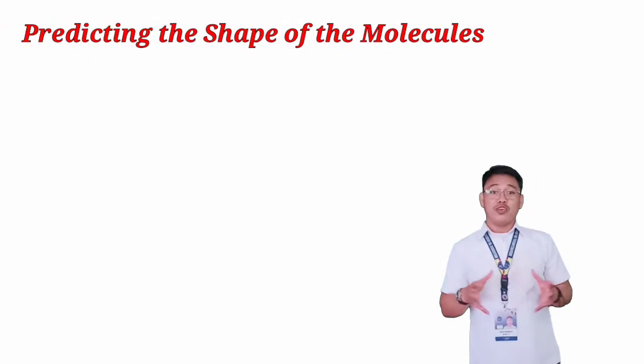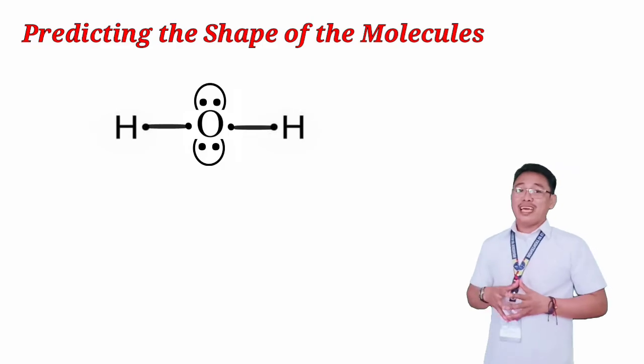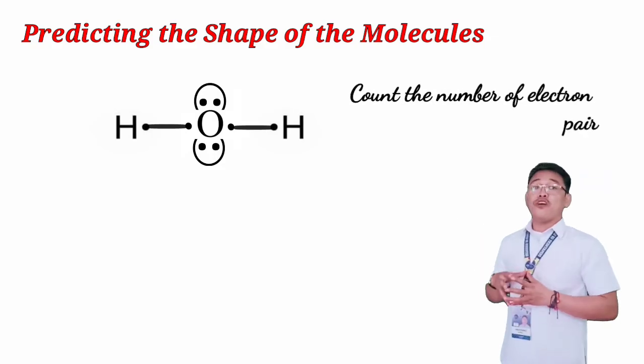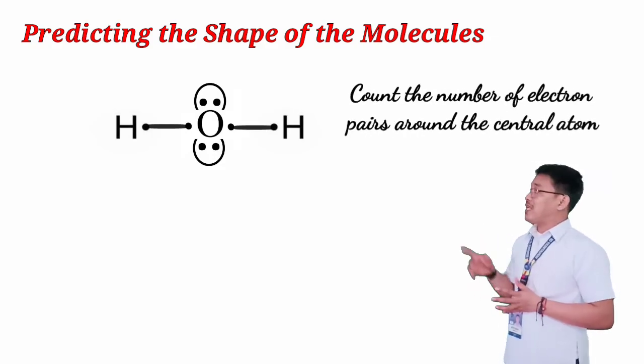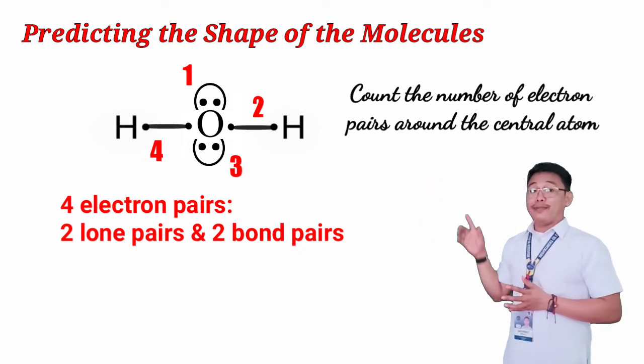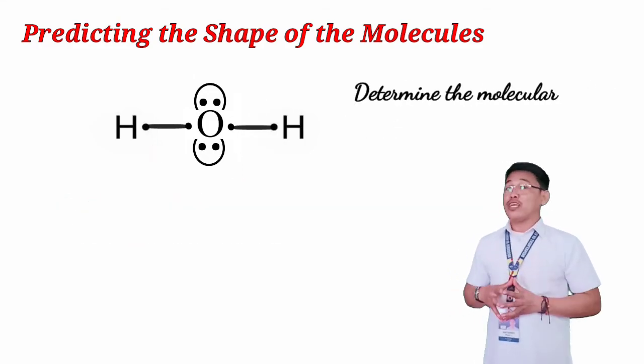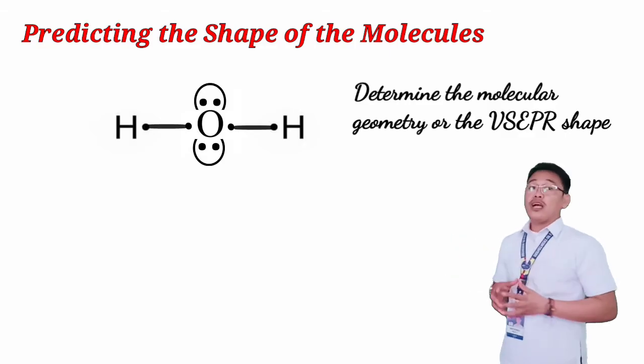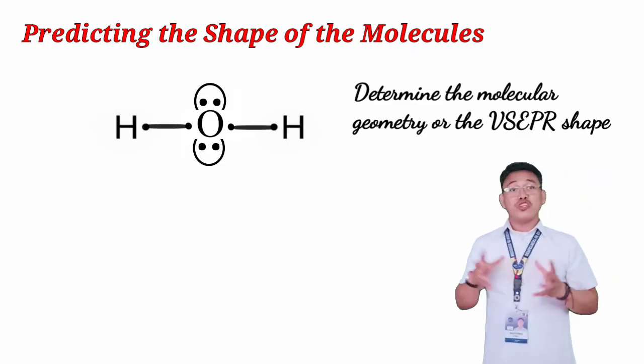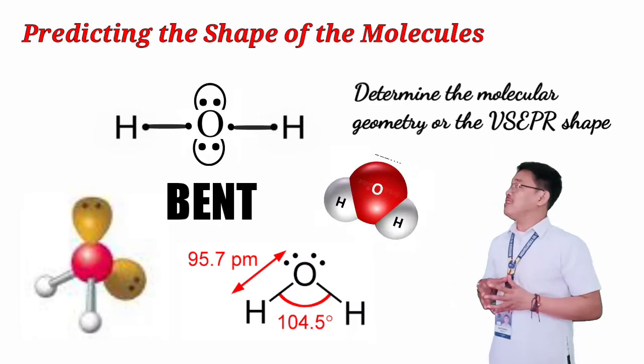Now, how do we predict the shape of the molecules given the Lewis dot structure? Let's have again water as an example. So this is the Lewis structure of H2O, water. Now, count the number of electron pairs around the central atom. There are four electron pairs around the central atom, two lone pairs and two bond pairs. Next, determine the molecular geometry of the molecule. As we have discussed earlier, considering the number of electron pairs, two bond pairs and two lone pairs, the water molecule is bent. And that is how water molecule looks like.